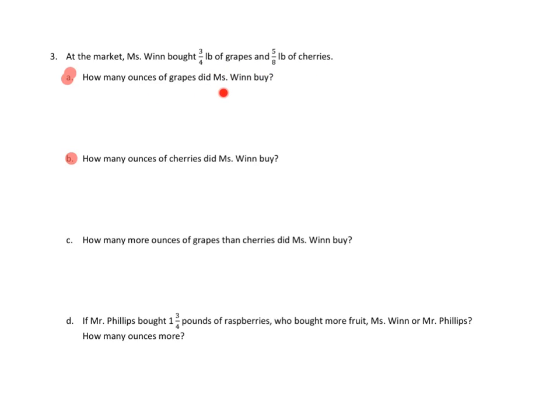How many ounces of grapes did Ms. Wynn buy? Ounces of grapes. So she bought, Ms. Wynn bought, three-fourths of a pound. So three-fourths times one pound. Okay, and that's the same as three-fourths times, let's see, a pound is how many ounces? I have to go to our reference materials. Sixteen, 16 ounces. We abbreviate ounces with OZ. So three-fourths times 16.